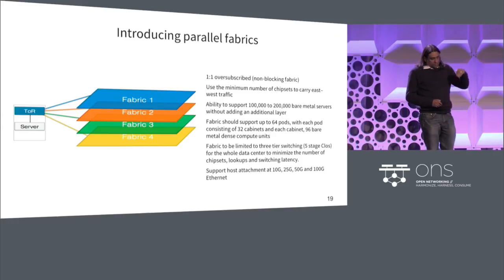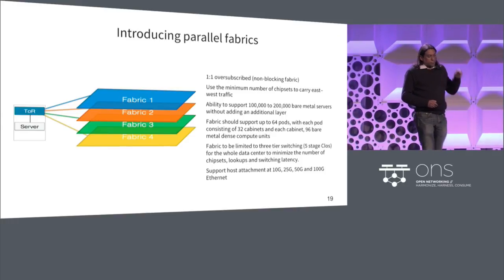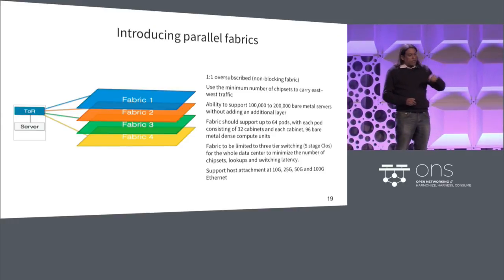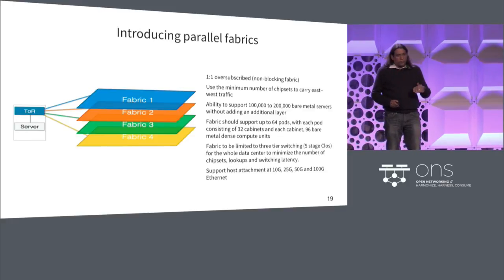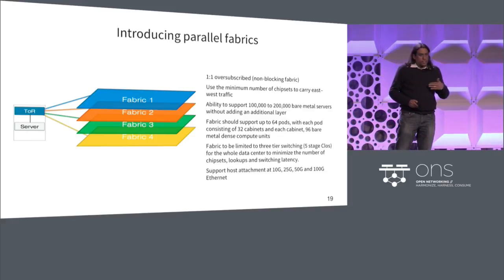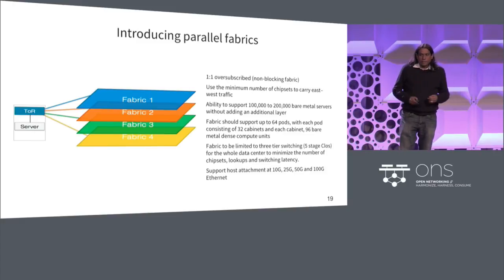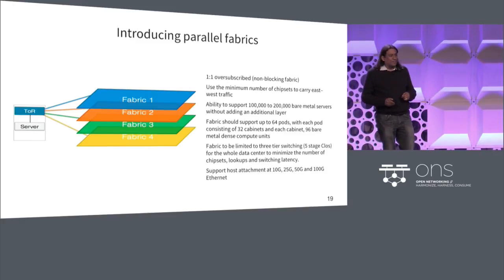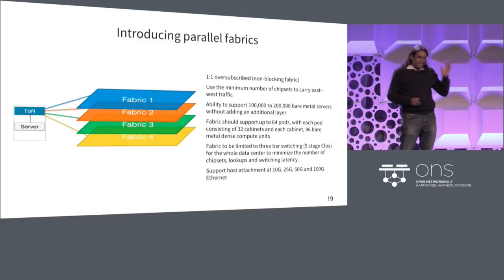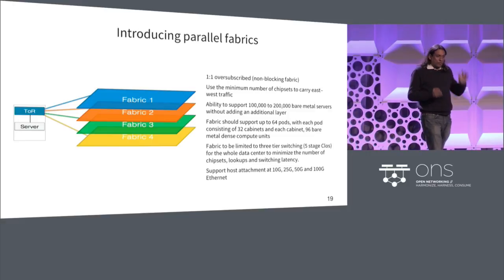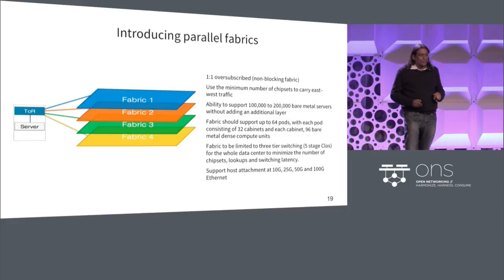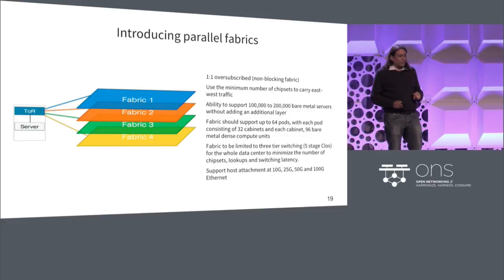At the host layer, we're supporting 10, 25, 50, and 100 gig. At this point we are largely doing 10 and 25. We are open to 50 but haven't seen a lot of use cases yet. We've built the infrastructure for 100 gig — it would be nice if the kernel gets there.